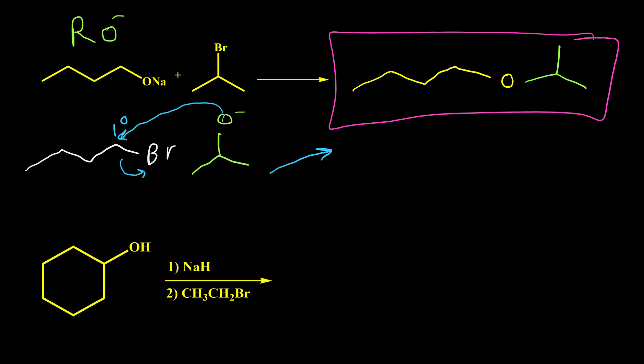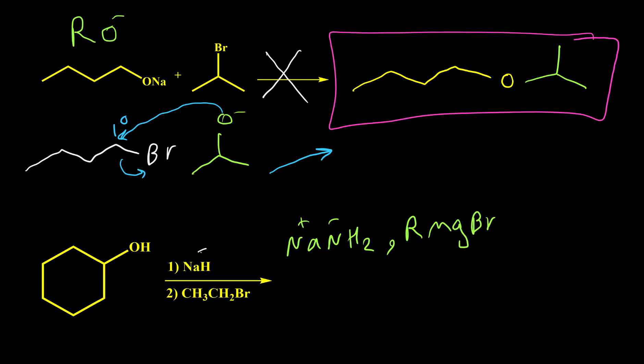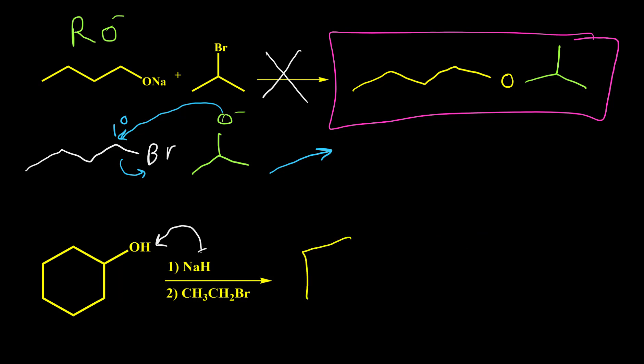For formation of an alkoxide anion, one common method is an acid-base reaction. Alcohols have low acidity, so to remove the hydrogen from OH we need to use a strong base. In addition to sodium hydride, we can also use sodium amide. By using sodium hydride, the H-negative takes the hydrogen, giving us the alkoxide anion.